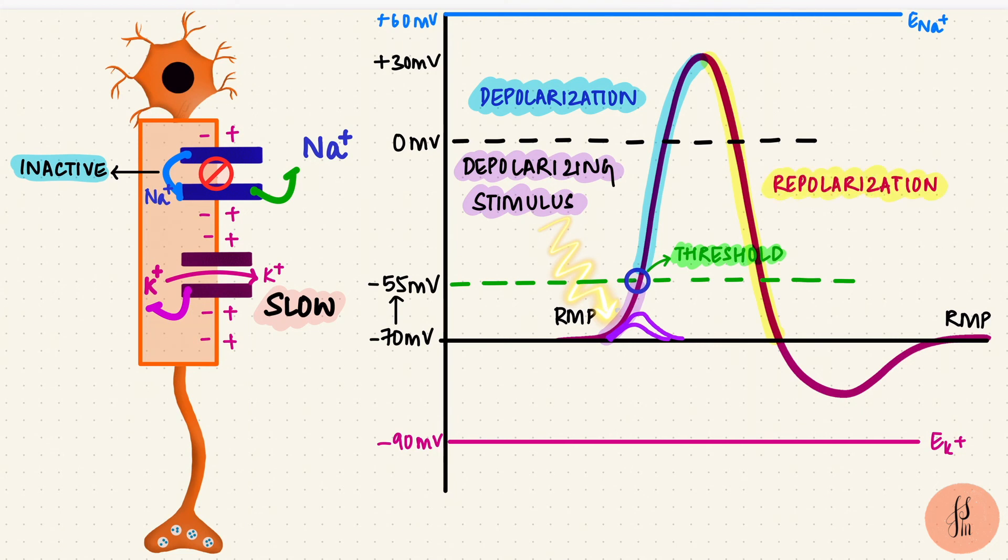The downstroke reaches rest, but then goes below that. The curve becomes more negative than rest. That's because the potassium channels are slow to close. Potassium continues leaving, making the membrane potential more negative. They're still trying to get close to potassium's equilibrium potential. This undershoot is called hyperpolarization, also called the after potential.